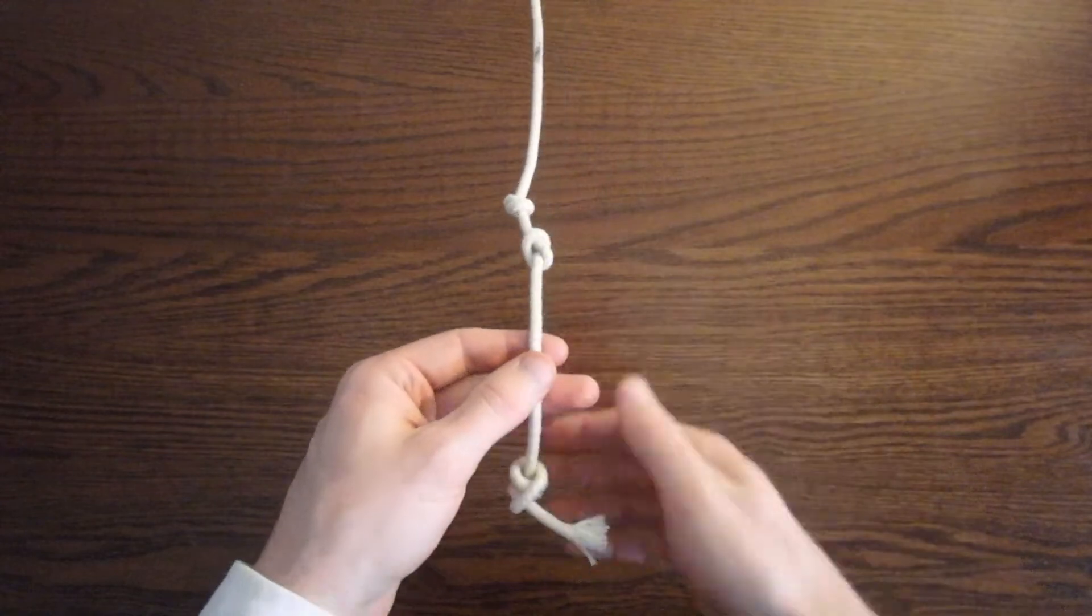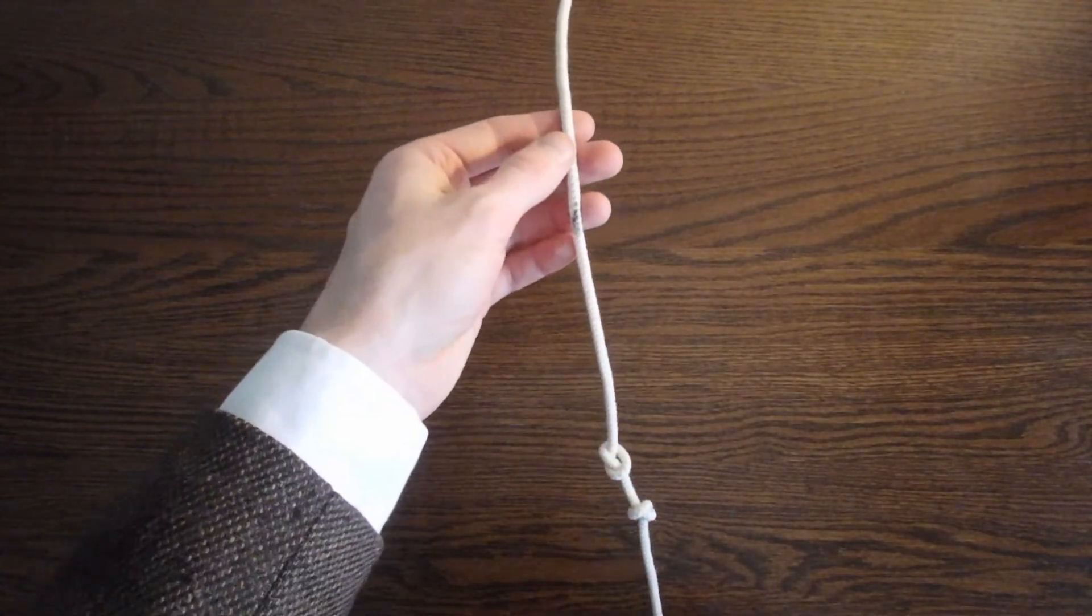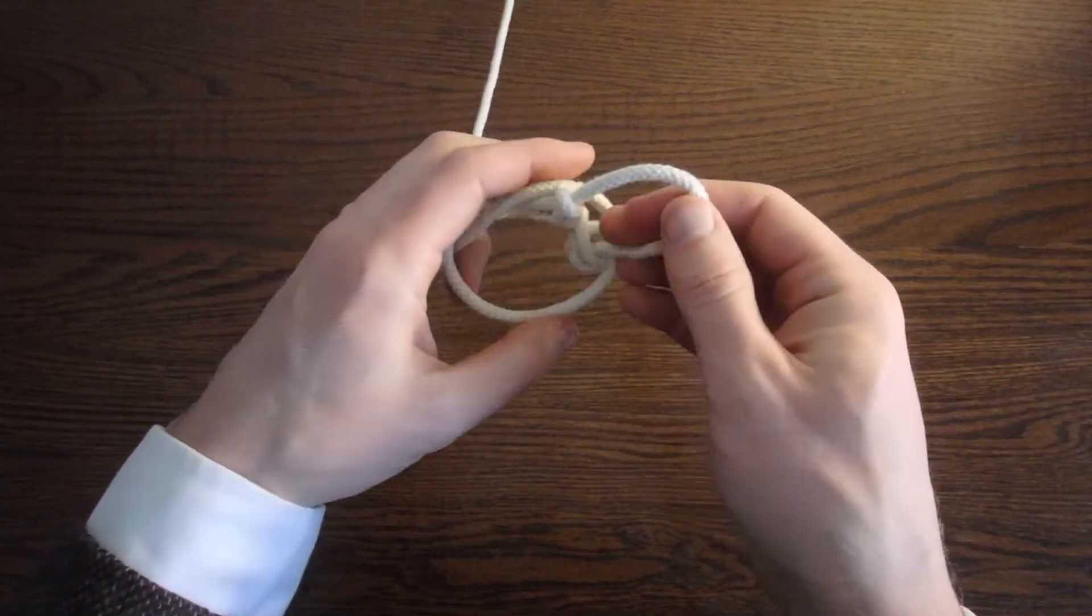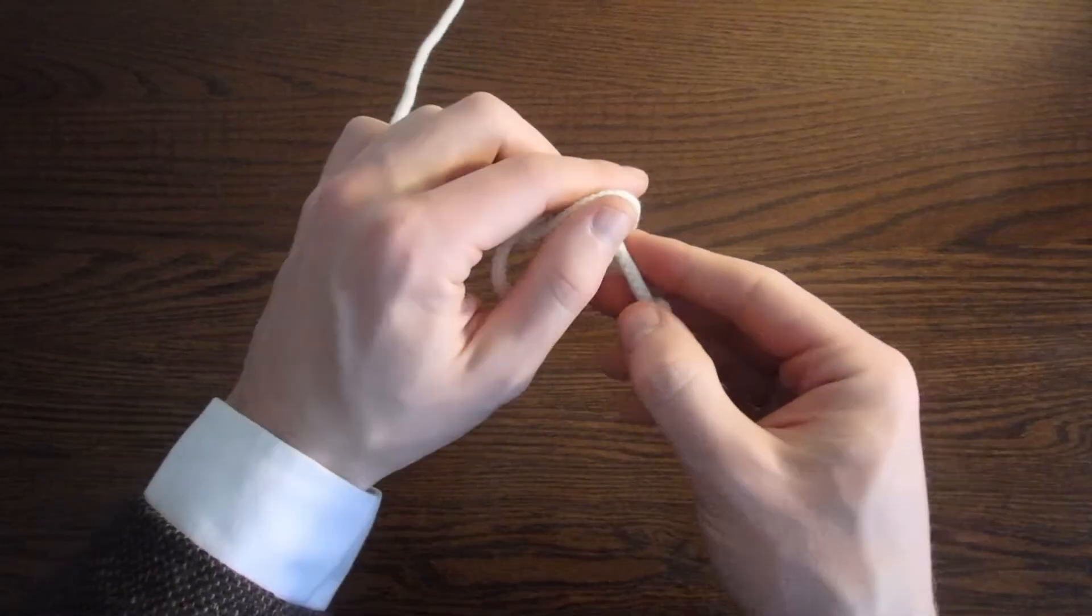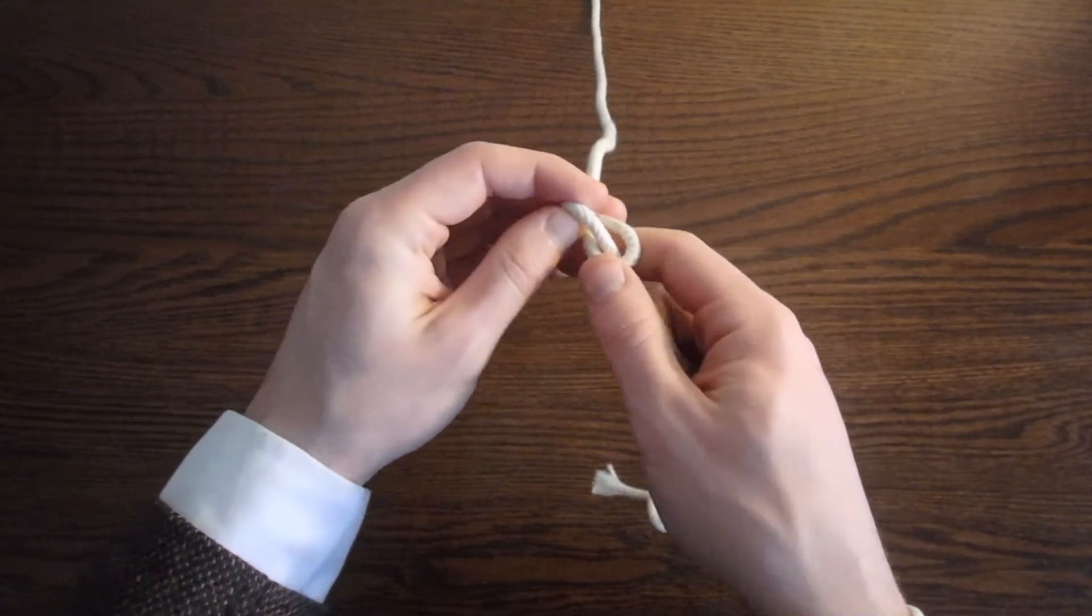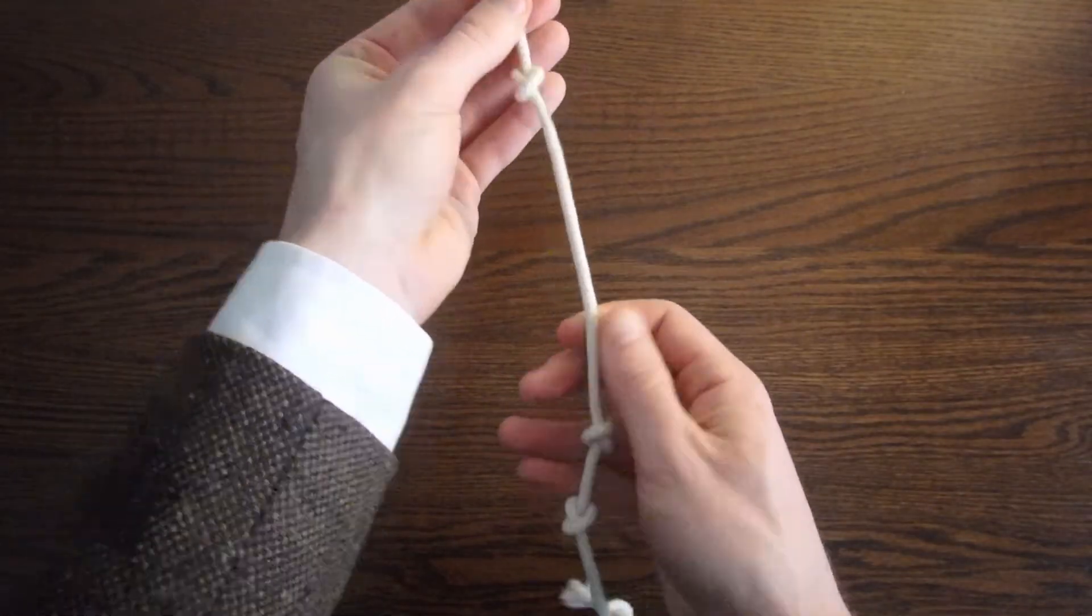What if we wanted to signify the number 123? We simply move further up the cord and tie one more single knot in the hundreds place to signify 123. Make sure all your decimal positions are well spaced so you can tell the difference between your tens, hundreds, and thousands.